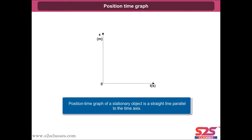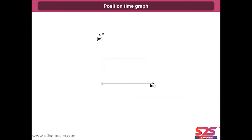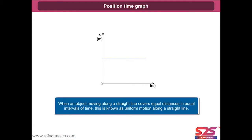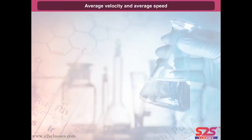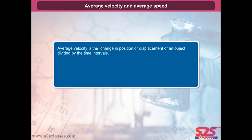The position-time graph of a stationary object is a straight line parallel to the time axis. When an object moving along a straight line covers equal distances in equal intervals of time, this is known as uniform motion along a straight line.